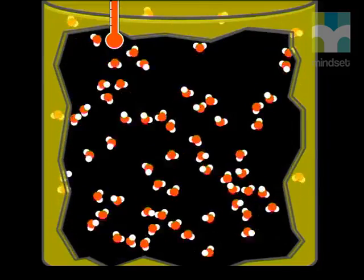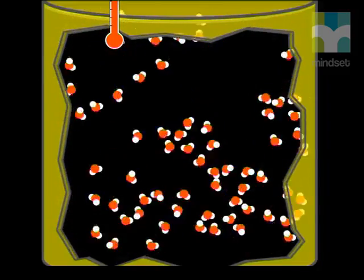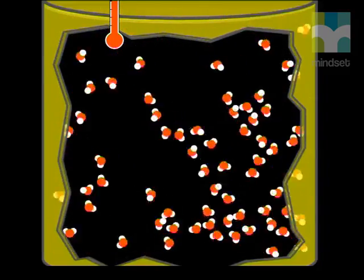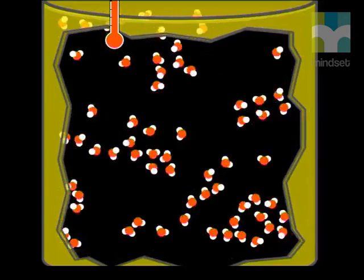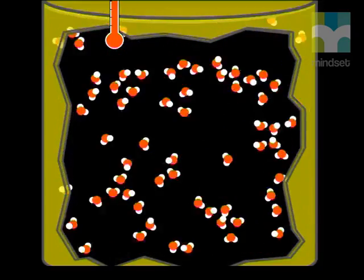The arrangement is irregular. It has a low density. A gas is highly compressible. Remember the average kinetic energy is directly proportional to the temperature of the gas.